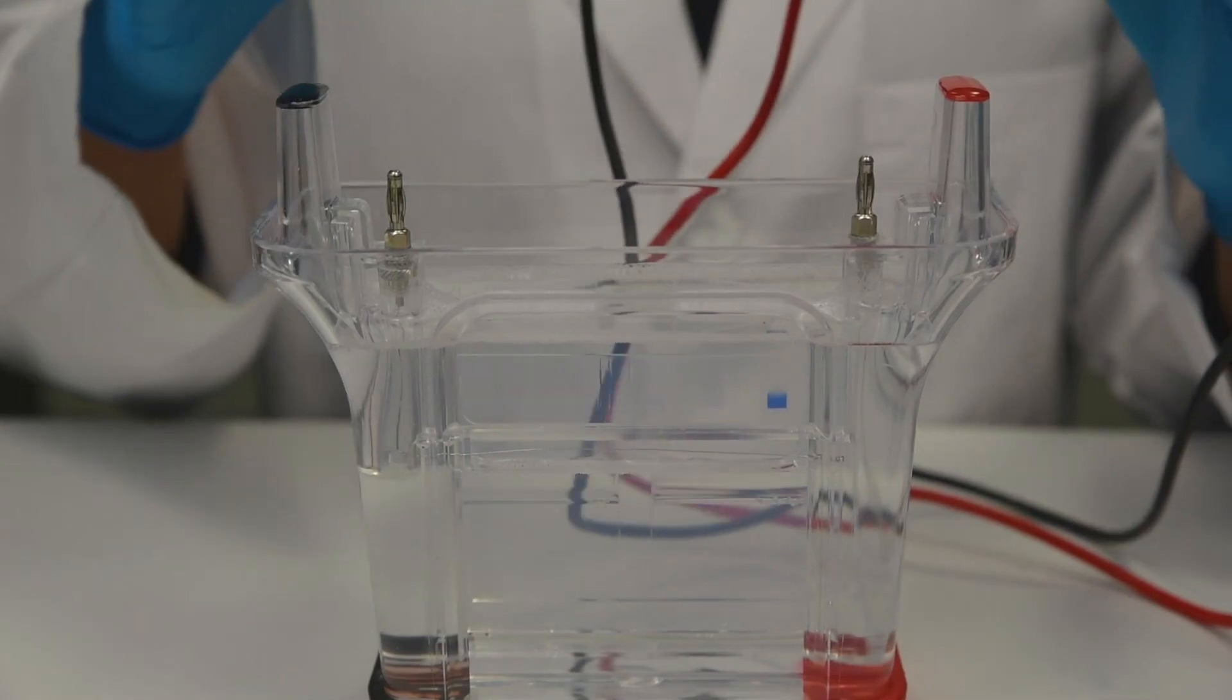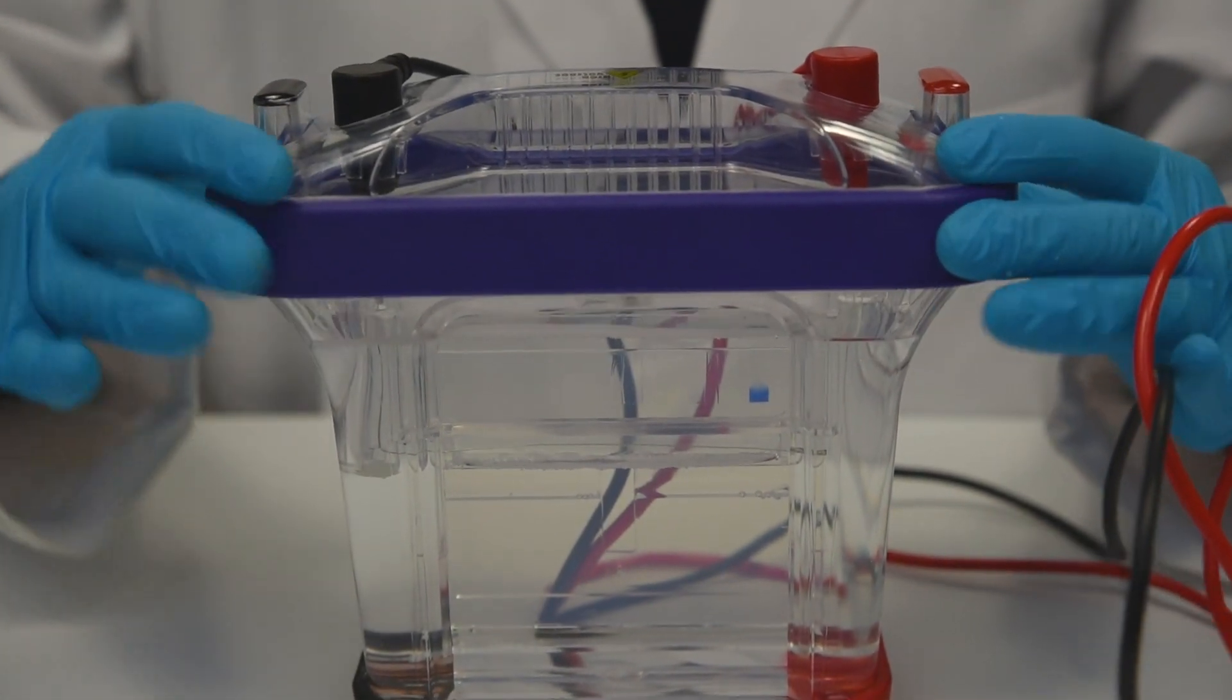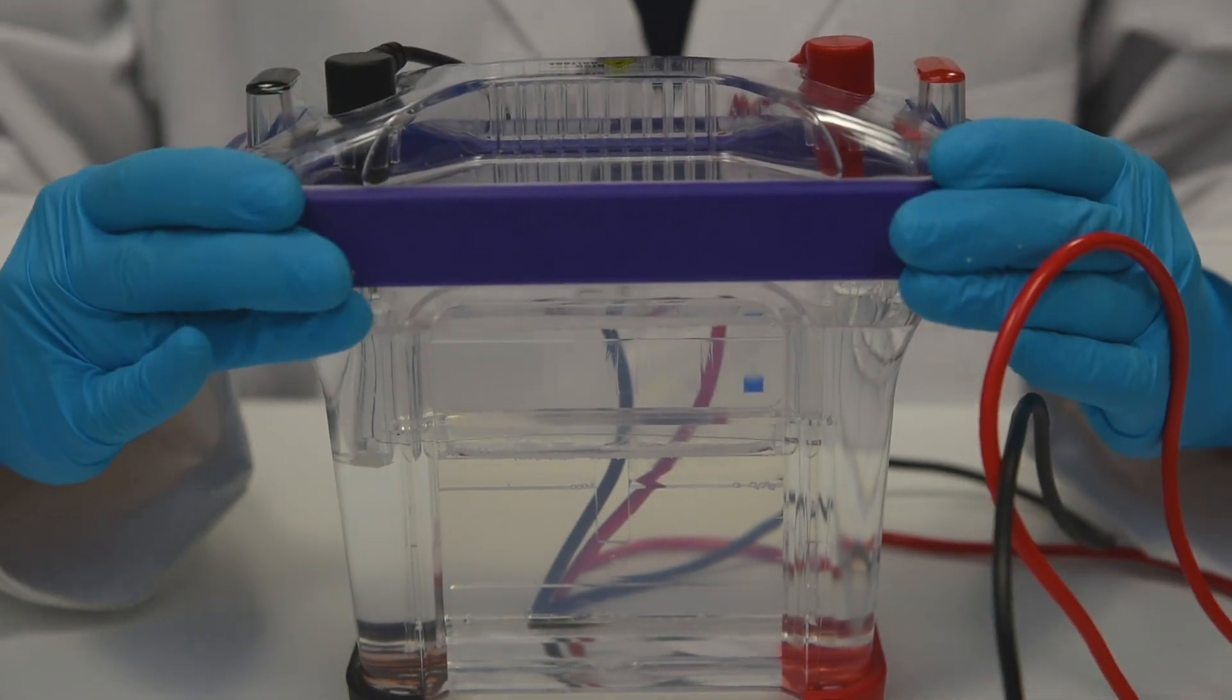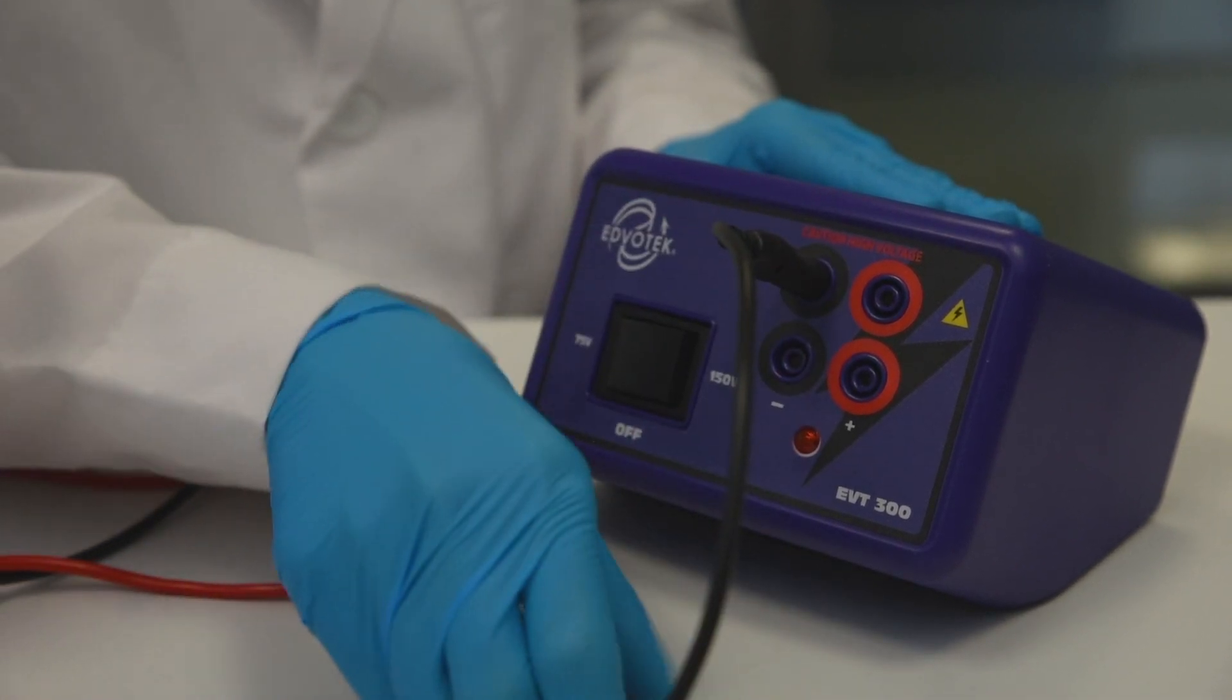Step 5: Once all samples have been loaded, carefully place the cover onto the electrode terminals. Step 6: Connect the electrical leads to the power supply.